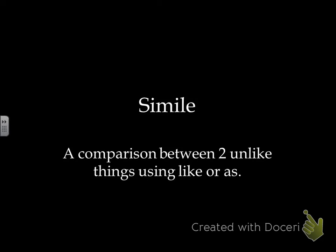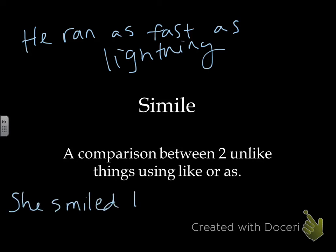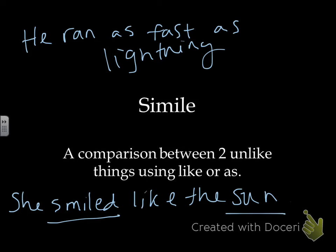A simile is a comparison between two unlike things using 'like' or 'as.' For example, 'he ran as fast as lightning,' or 'she smiled like the sun.' Comparing two unlike things using 'like' or 'as' is a simile.